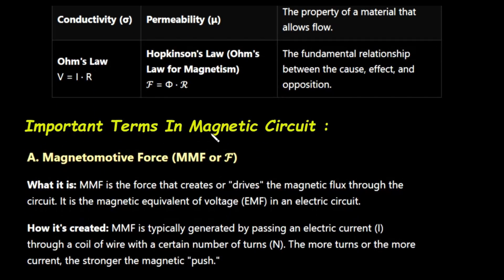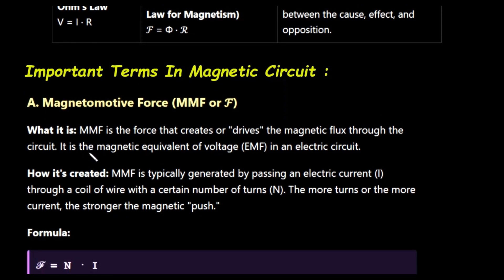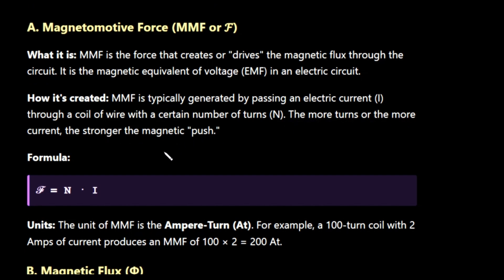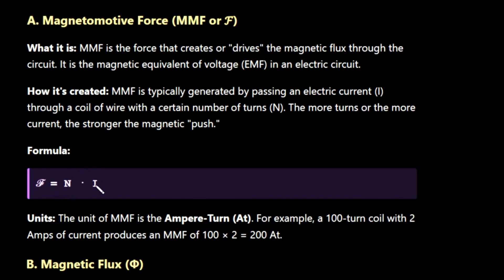Now here are some important terms in magnetic circuit. First, magnetomotive force or MMF: MMF is the force that creates or drives the magnetic flux through the circuit. It is the magnetic equivalent of voltage or EMF in an electric circuit. MMF is typically generated by passing an electric current I through a coil of wire with N turns. The more turns or the more current, the stronger the magnetic push. The formula is F = N × I, and the unit of MMF is ampere-turns. For example, a 100-turn coil with 2 amperes of current produces an MMF of 200 ampere-turns.